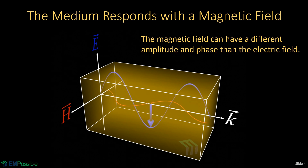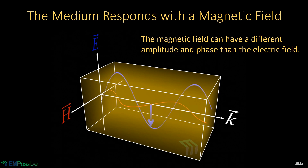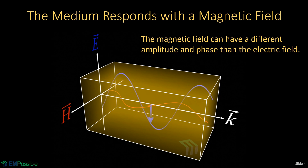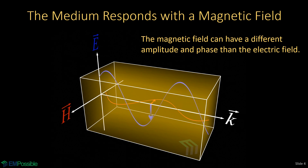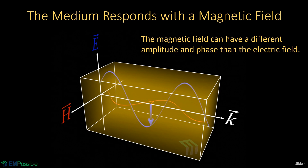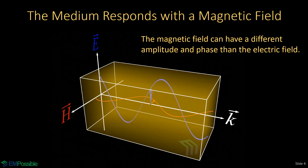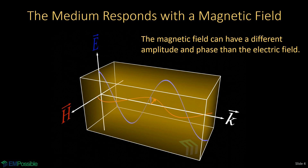After that electric field is applied, there's an interaction with the charges at the atomic scale, and there's also coupling through Maxwell's equations. All of this combines to make the medium respond with some oscillating magnetic field. Electromagnetic waves always have an electric and magnetic field component because it's a coupling of energy between those two through Maxwell's equations that supports waves. The magnetic field can have, and usually does have, a different magnitude and phase than the driving electric field. Usually the phase difference between those two is very, very small.